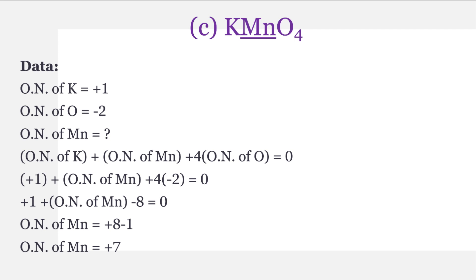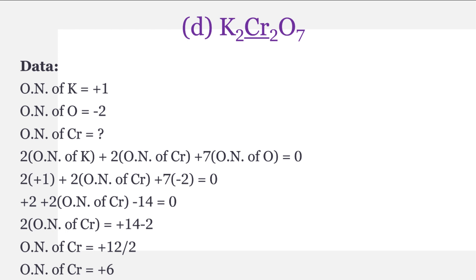Now part C: potassium permanganate KMnO4, in which we have to find out the oxidation number of manganese Mn. Manganese ko underline kiya gaya hai toh uska oxidation number humne find out karna hai. Data: oxidation number of potassium is plus one, oxidation number of oxygen is minus two, and oxidation number of manganese humne find out karna hai. Formula: oxidation number of potassium plus oxidation number of manganese plus four multiplied by oxidation number of oxygen equals zero. Values put ki aur at the end result: oxidation number of manganese is equal to plus seven.